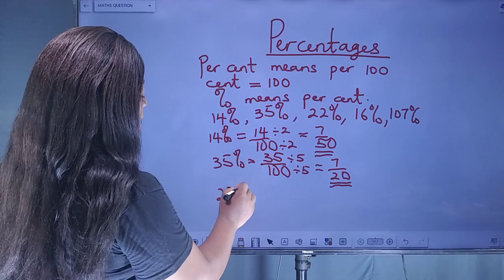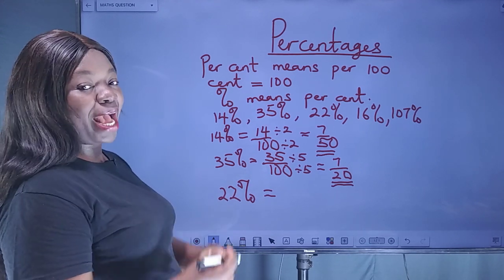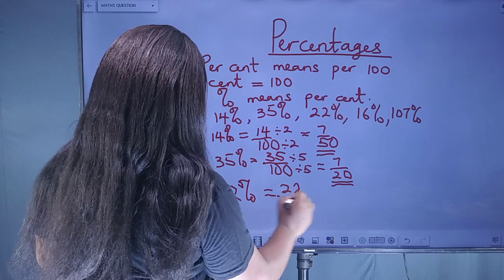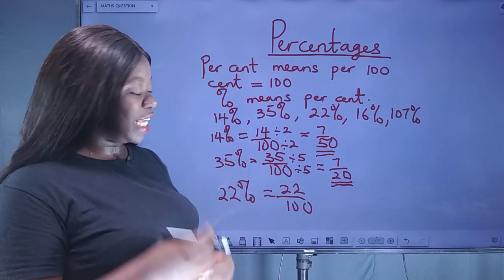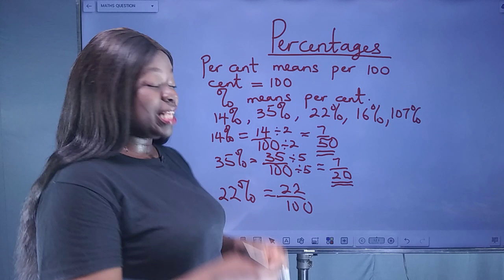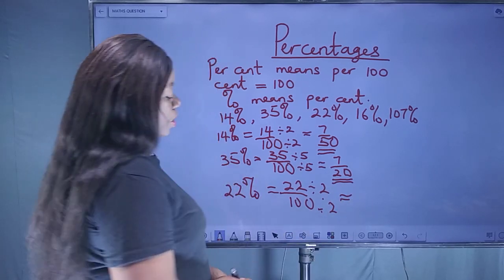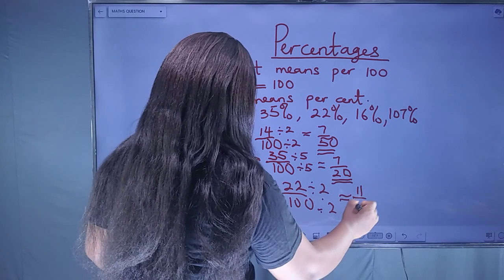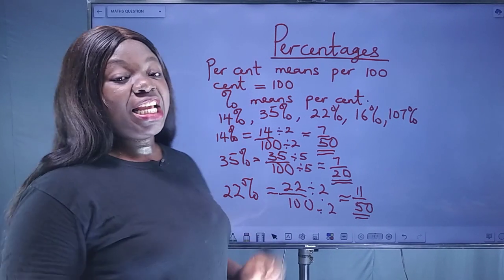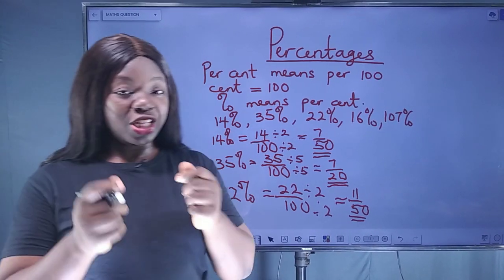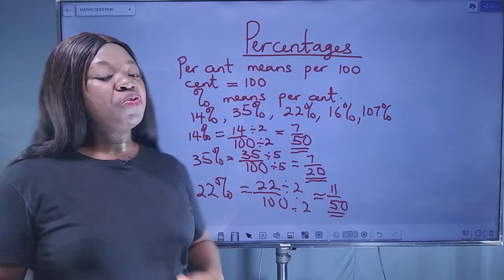The next one is 22 percent. To express 22 percent as a fraction, divide by 100: 22 over 100. The common factor of 22 and 100 is 2. So 22 ÷ 2 = 11 and 100 ÷ 2 = 50, giving us 11 over 50. There is no common factor between 11 and 50, so this is the lowest term. I hope you're enjoying this class — click the subscribe button, like, comment, and share. Next time we will continue with percentages. Bye!